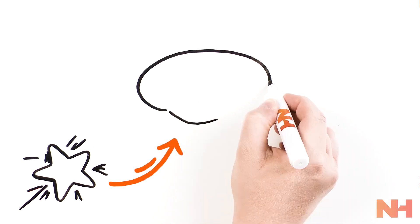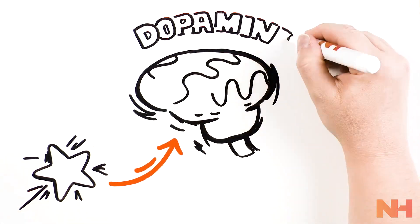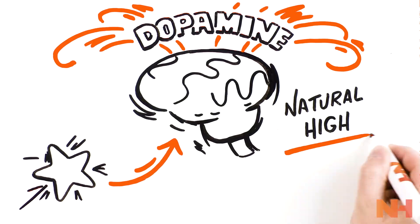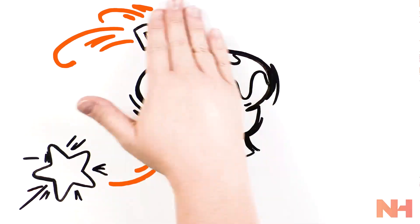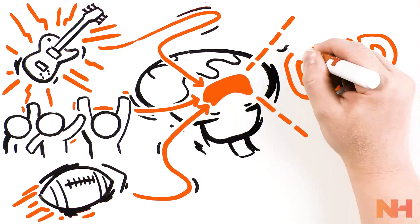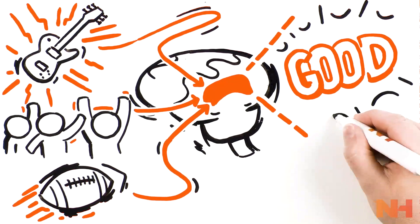When you do something rewarding, dopamine, a chemical messenger in your brain, gives you a natural high. Over time, your brain connects positive activities, people, and things with the resulting good feelings. With each fun experience, your brain learns, creating a ranking of what makes you feel good.